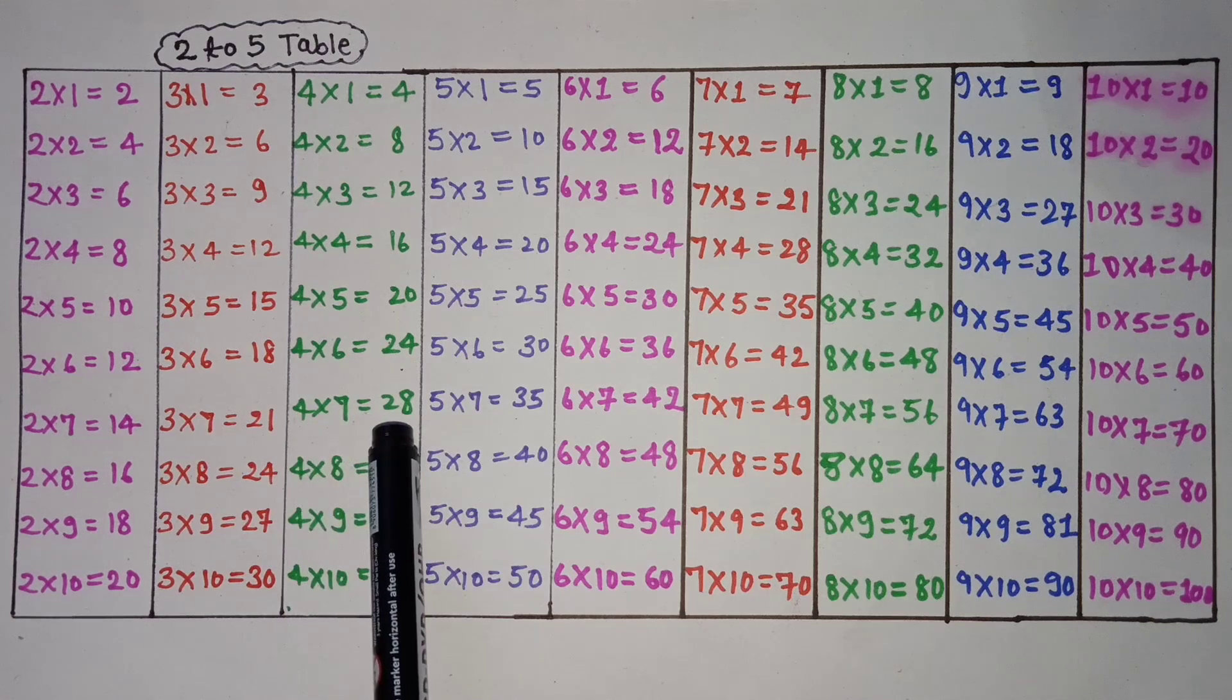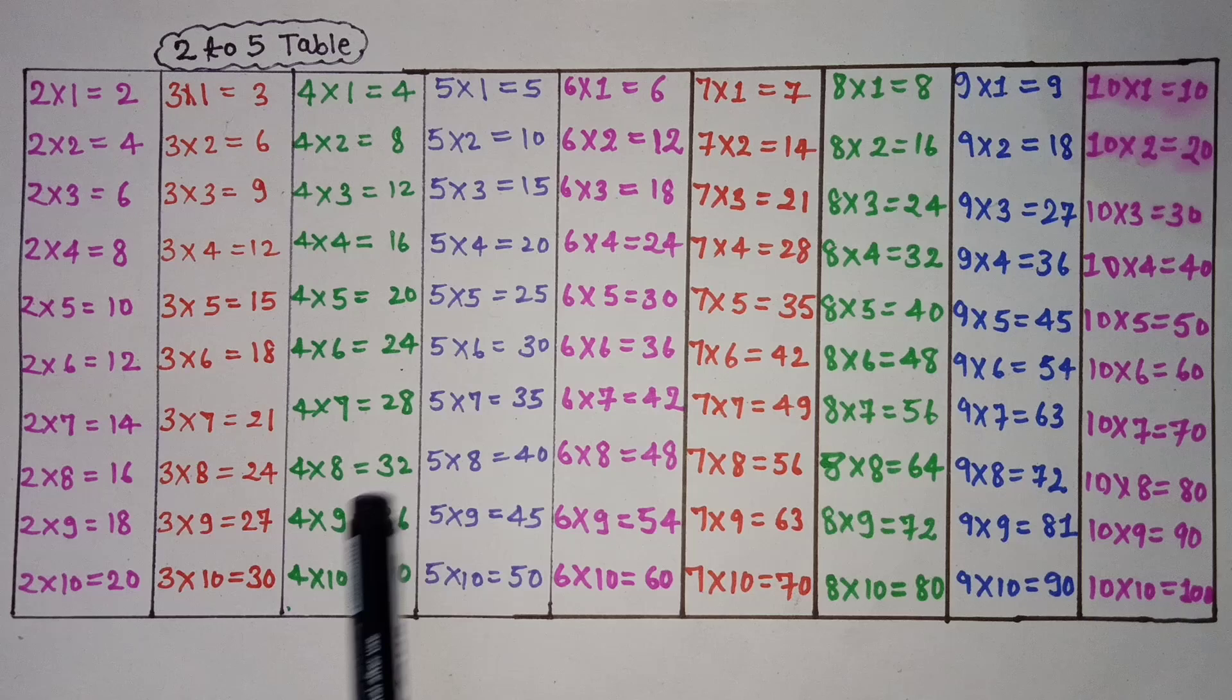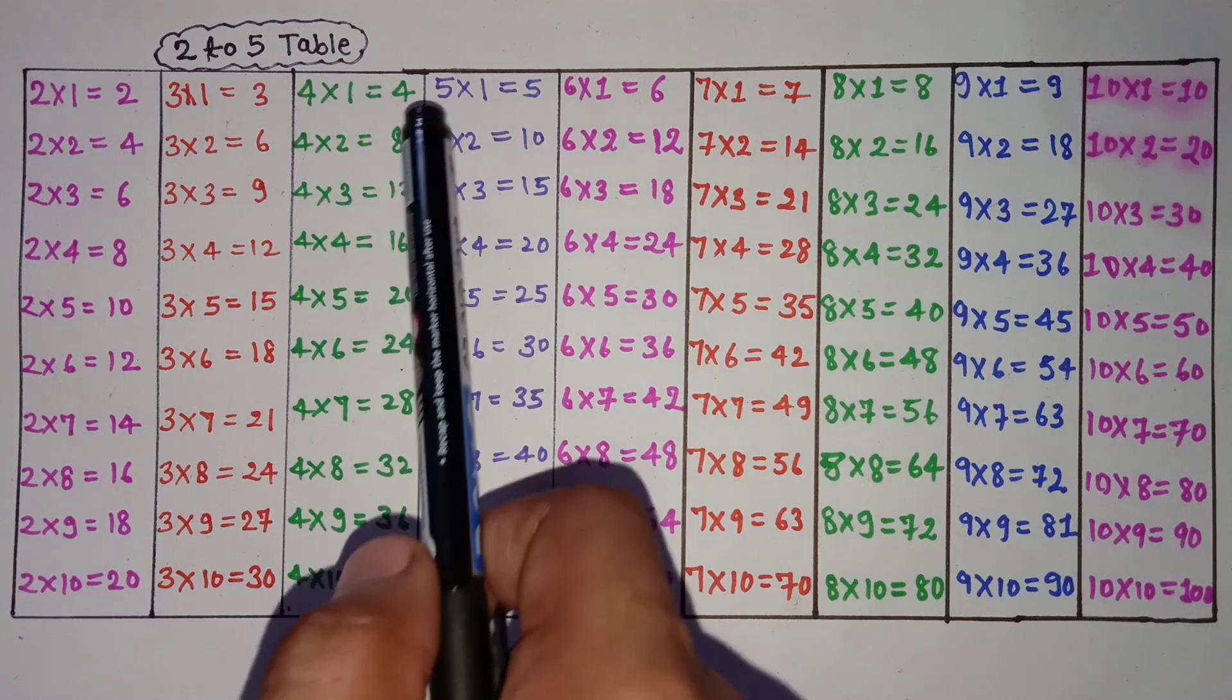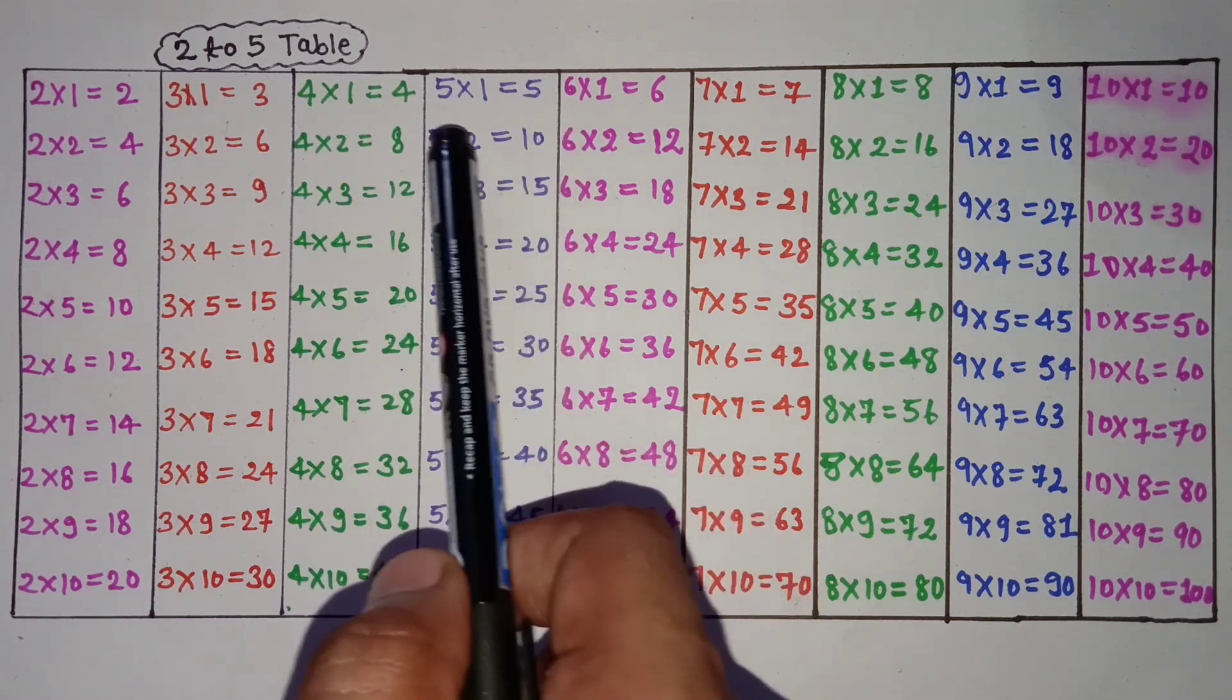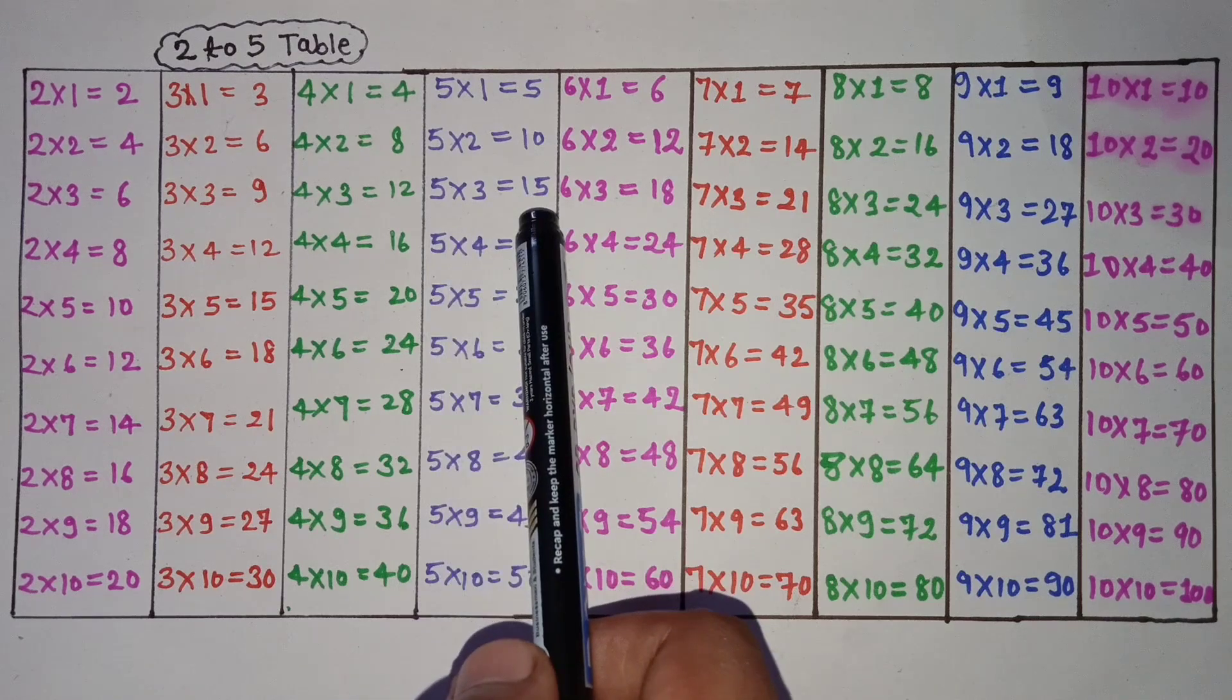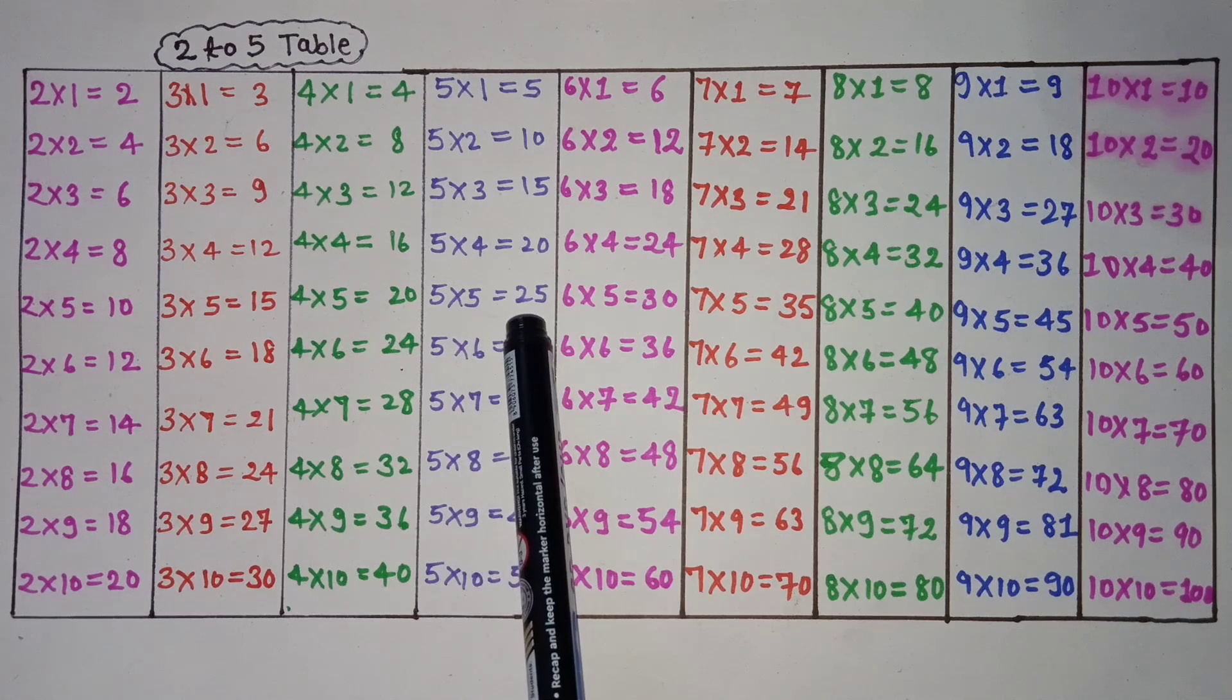4 times 7 is 28, 4 times 8 is 32, 4 times 9 is 36, 4 times 10 is 40. 5 times 1 is 5, 5 times 2 is 10, 5 times 3 is 15, 5 times 4 is 20, 5 times 5 is 25.